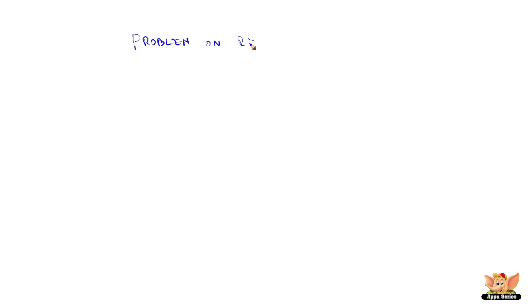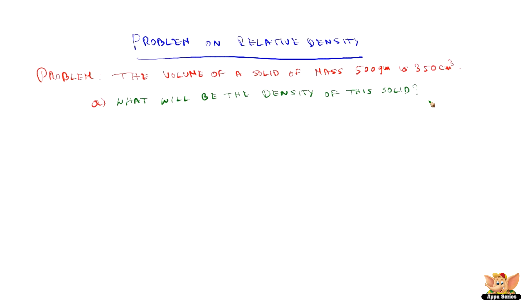Problem on relative density. Let us define the problem. The volume of a solid of mass 500 grams is 350 cm³. We need to find what will be the density of this solid.